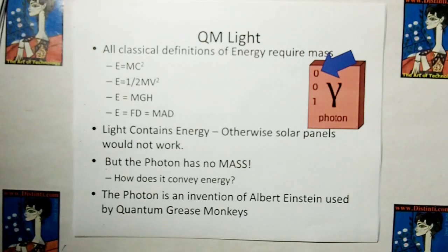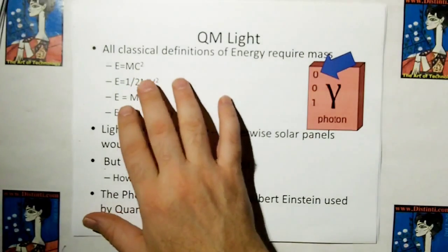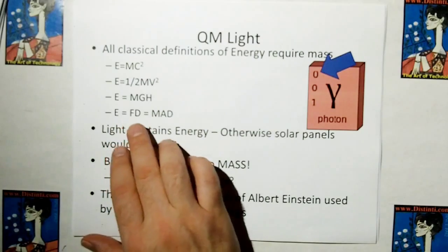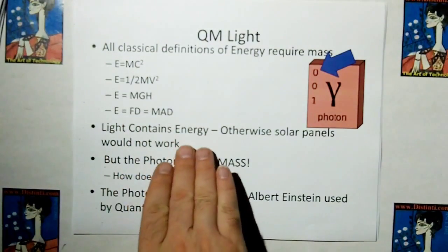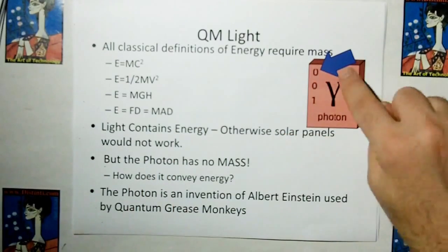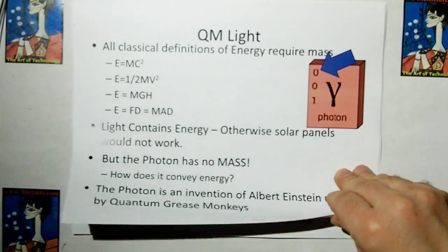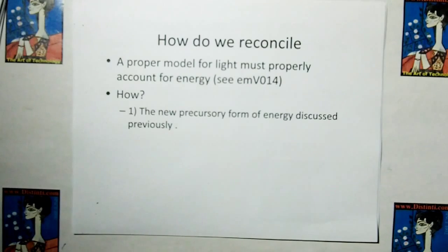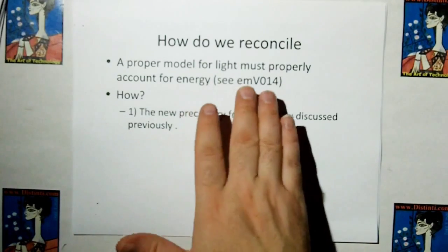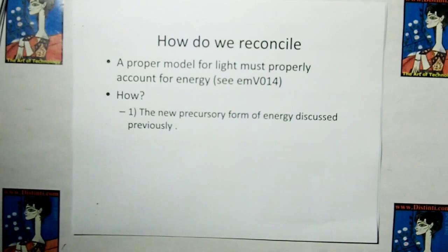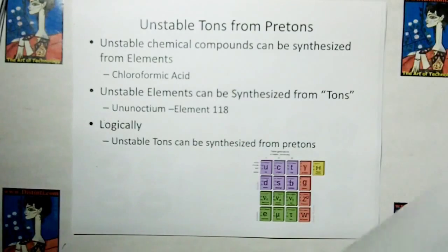And let's talk about photons. All classical definitions of energy require mass by the classical definition of energy: E equals MC squared, one-half MV squared, E equals MGH, and E equals force times distance, which is mass times acceleration times distance. We know light contains energy, otherwise solar panels would not work. But the photon has no mass. So how can photons convey energy if they have no mass? This is the stuff about modern science that just keeps me up at night and makes me howl at the moon. This photon is an invention of Albert Einstein and it's used by quantum grease monkeys. So how do we reconcile this? Well, the new precursory form of energy discussed previously will fit the bill.